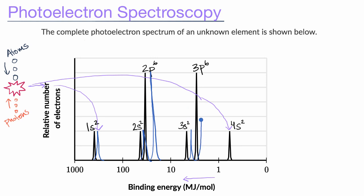And 3p⁶ is going to be a little bit to the right as well. Then what does the 4s subshell look like? It doesn't have two electrons in the 4s subshell — it only has one, because it only has 19 electrons, not 20. So it's going to be a little bit to the right with a lower binding energy, and it's only going to be half as high, because there's only one electron, not two. That would be the photoelectron spectrum of potassium, roughly speaking.